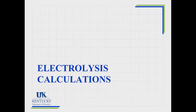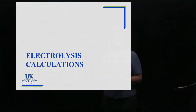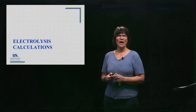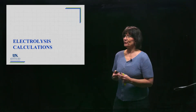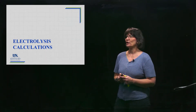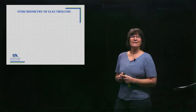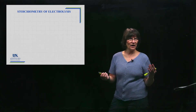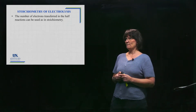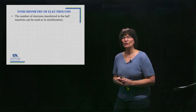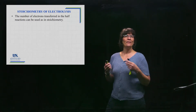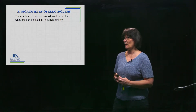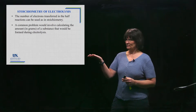Let's do a few calculations involving electrolysis. When you run electrolysis, you can collect products at the anode and at the cathode, and we can do some predictions of how much would be produced, or how long it would take to generate a certain amount of product. It's basically a stoichiometry process like any other, except electrons are now involved. You have to know the number of electrons transferred in the half reaction.